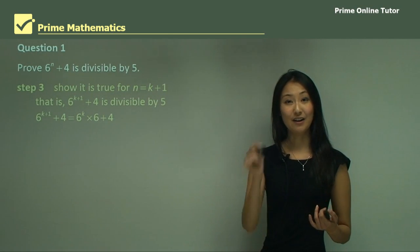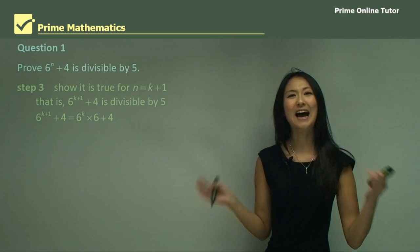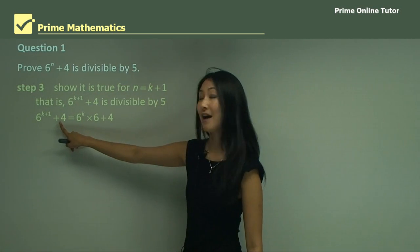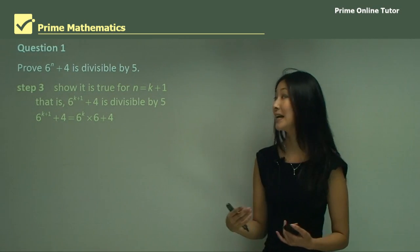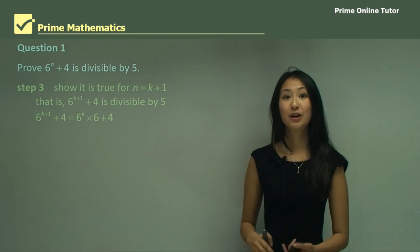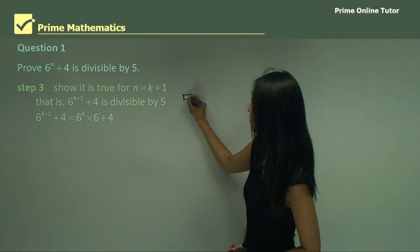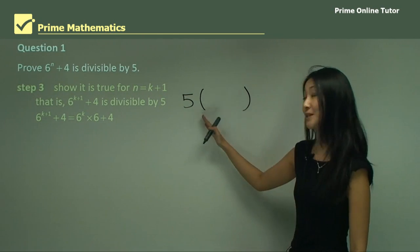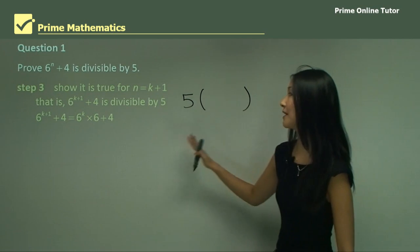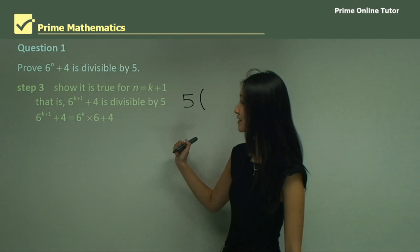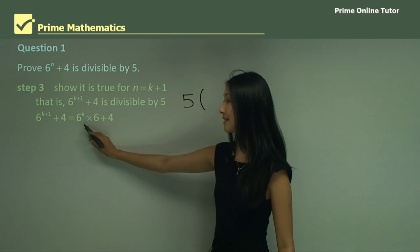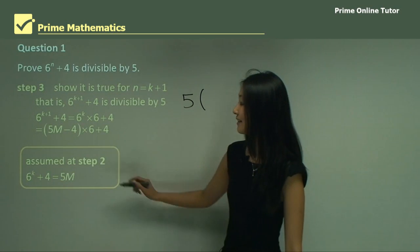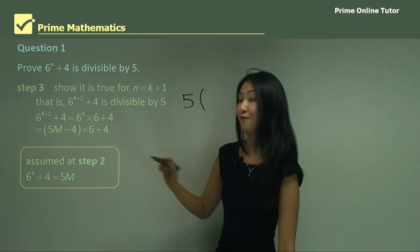We start off with what's been given: six to the power of k plus one, plus four. What we need to do is manipulate it so we can make it equal to five multiplied by an integer, to show that it's divisible by five. We want to manipulate it so we can factorize five out. The first thing we want to do is separate this into six to the power of k times six, plus four — and the reason is so we can use the assumption that six to the power of k plus four equals five m.